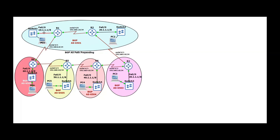Also, the return traffic: Router 3 wants to reach the 10.network which is on Router 1. Currently Router 3 will use serial 4/1 because it has fewer AS hops. Our requirement is that Router 3 should also use the same path that Router 1 uses — meaning Router 3 will go via serial 4/2, AS6504, AS6505, AS6506, in order to reach the 10.network.